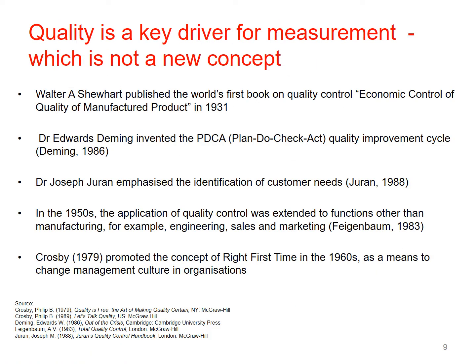Quality is a key driver for measurement and it's not a new concept. Walter Shewhart published the world's first book on quality control, 'Economic Control of Quality of Manufactured Product,' back in 1931. Edwards Deming invented the Plan-Do-Check-Act quality improvement cycle. Joseph Juran emphasized the identification of customer needs. In the fifties, the application of quality control was extended to functions other than manufacturing, such as engineering, sales and marketing. Then Crosby promoted the concept of right first time in the sixties as a means to change management culture in organisations.